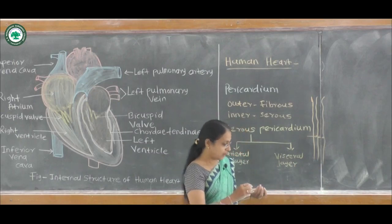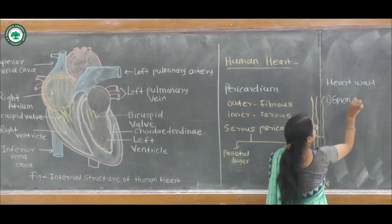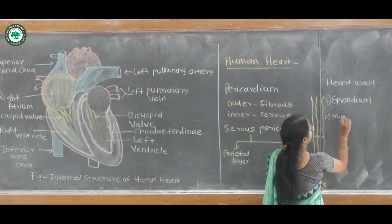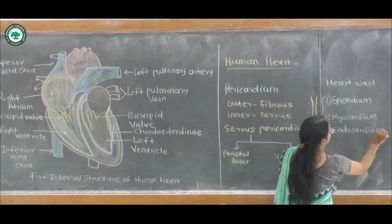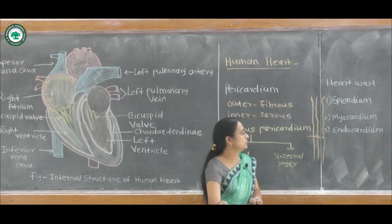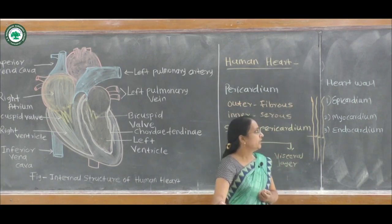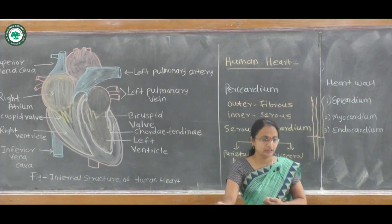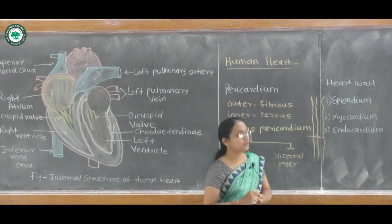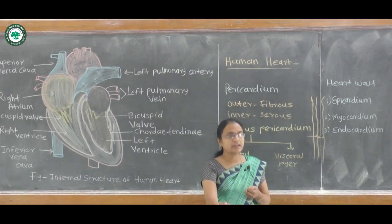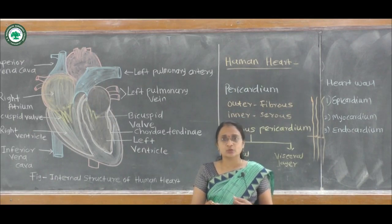The heart wall is made up of three layers: the epicardium, the myocardium, and the endocardium. The epicardium is the outer layer, and endocardium is the innermost layer. The epicardium is made up of a single layer of squamous epithelial tissue, and the endocardium is also made up of a single layer of squamous epithelial tissue. Both are protective in function.